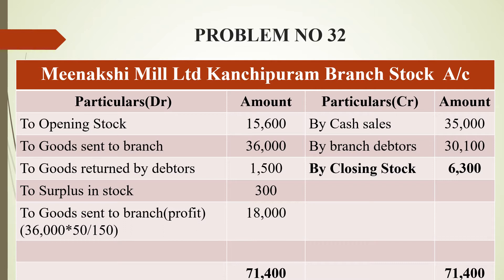By branch debtors — credit sales — that is Rs. 30,100. After totalling both sides, we get a credit balance of Rs. 6,300 as closing stock. The grand total on both sides is Rs. 71,400.